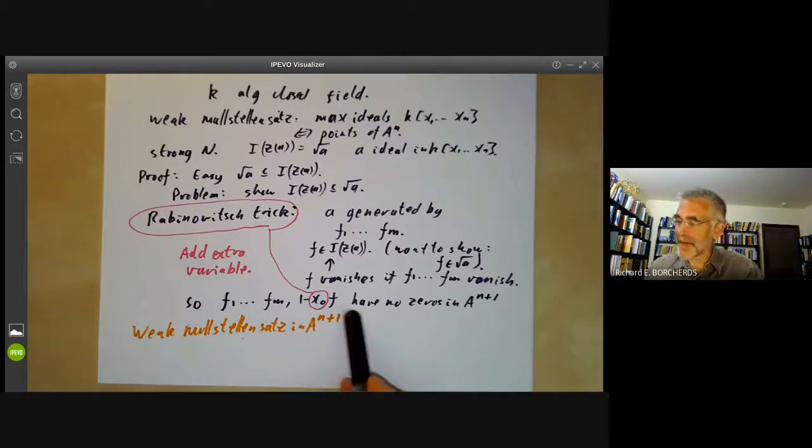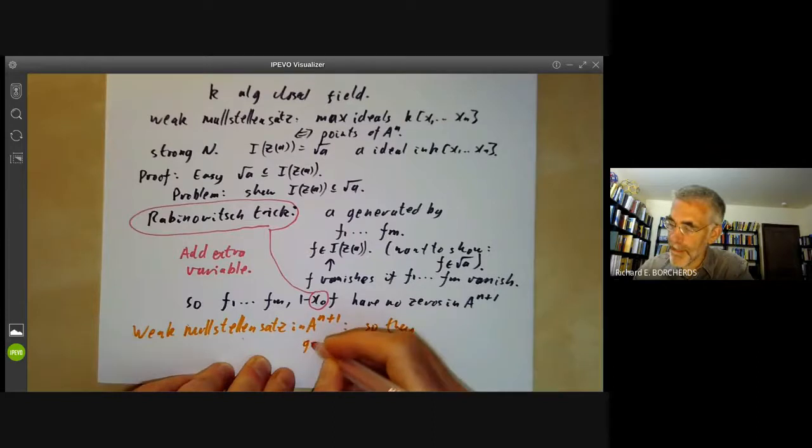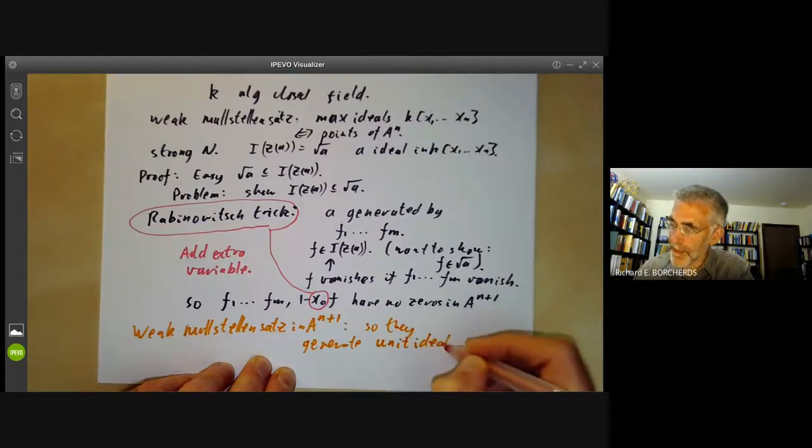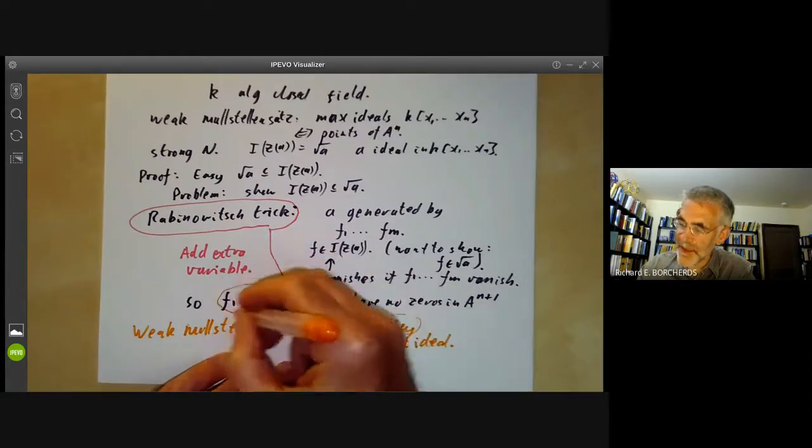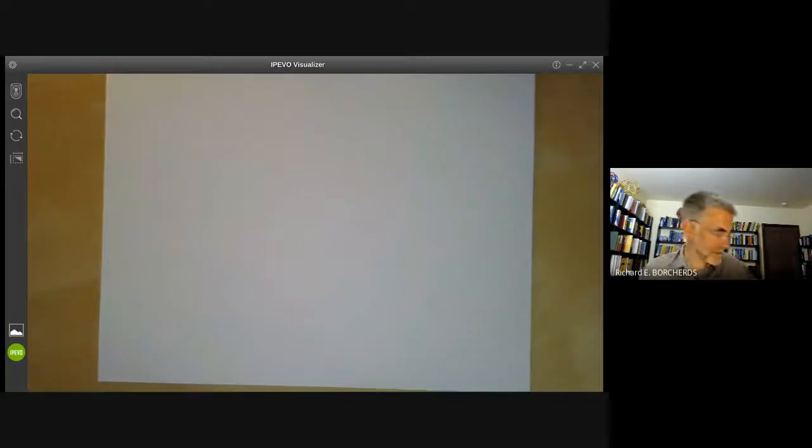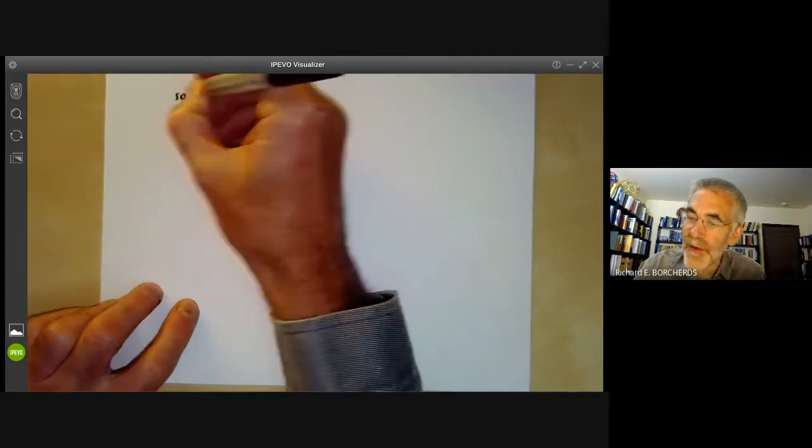to A^(n+1). So when I said the weak Nullstellensatz implies the strong Nullstellensatz, it's really the weak Nullstellensatz in one extra dimension implies the strong Nullstellensatz in n dimensions. Well, the weak Nullstellensatz says that if they have no common zeros, this implies they generate the unit ideal.